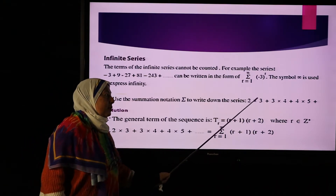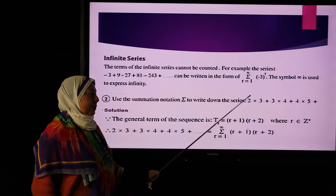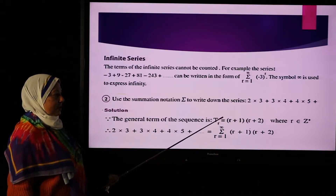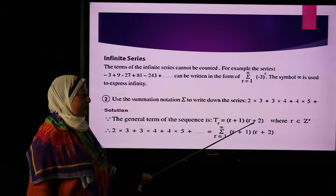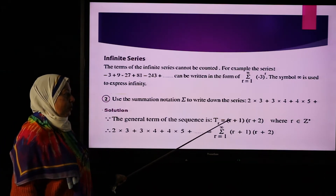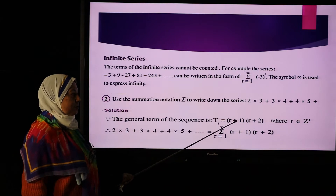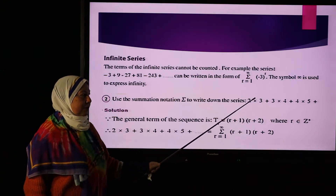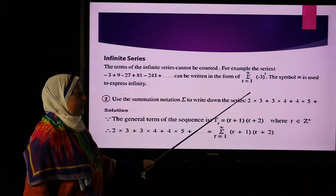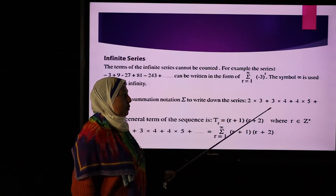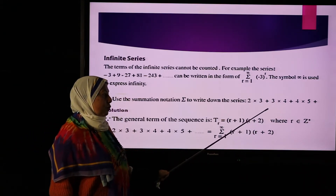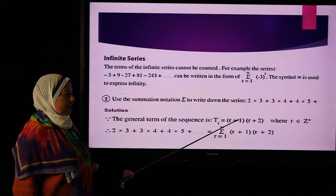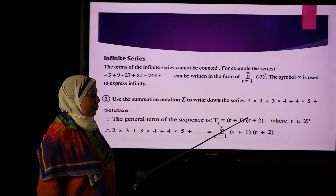We find the result: the general term tn of this sequence equals (r+1)(r+2). Why? When r=1: 1+1=2 and 1+2=3, giving the first term 2×3. When r=2: 2+1=3 and 2+2=4, giving the second term 3×4.